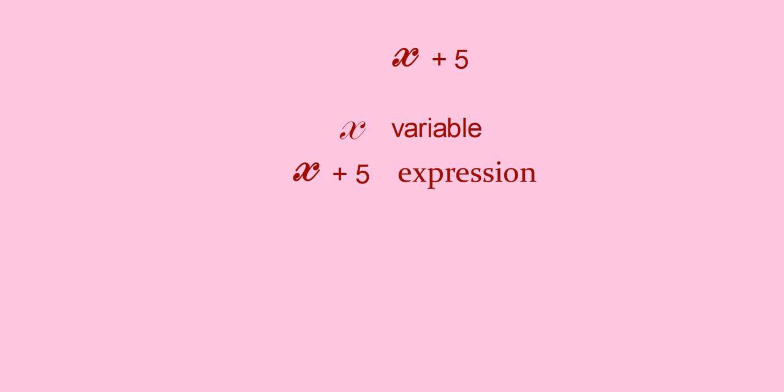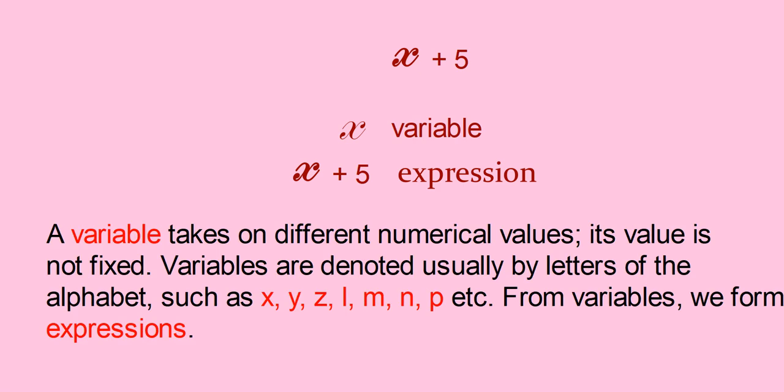Here x we can call it as a variable and x plus 5 we can call it as an expression. That is, a variable takes on different numerical values. Its value is not fixed. Variables are denoted usually by letters of the alphabet, such as x, y, z, l, m, n, p, etc. From variables, we form expressions.